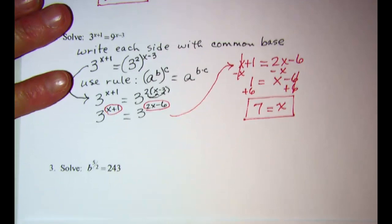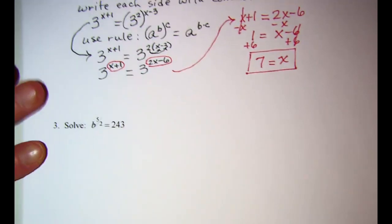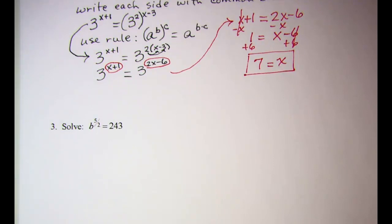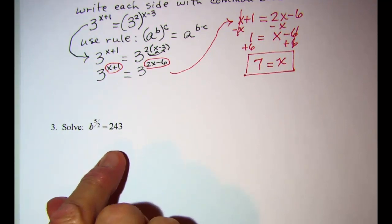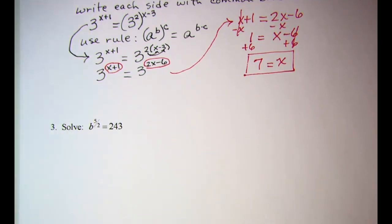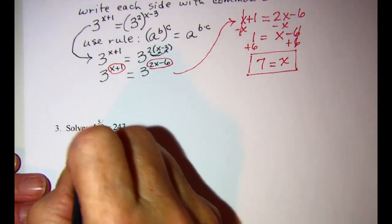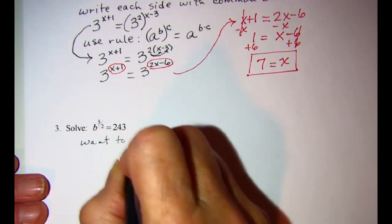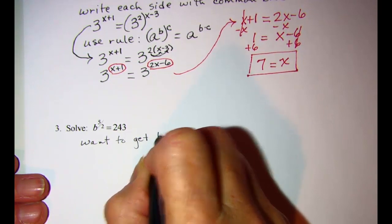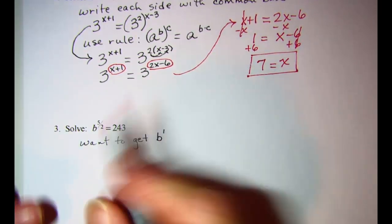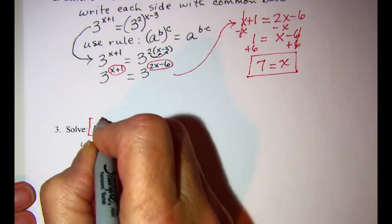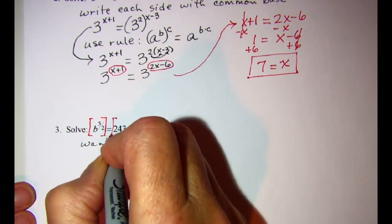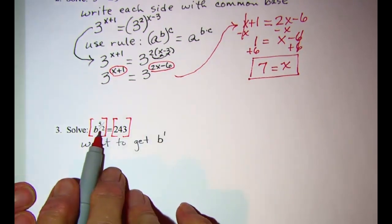And then our last example. We have b^(5/2) = 243. Now when I'm solving for b, what I want to get is b to the first power. So what I need to do is raise both sides of my equation to a power which is the reciprocal of 5/2.